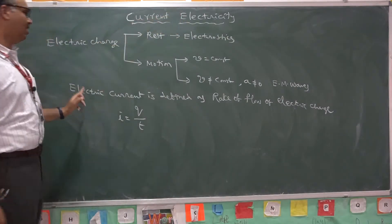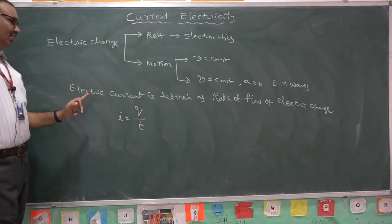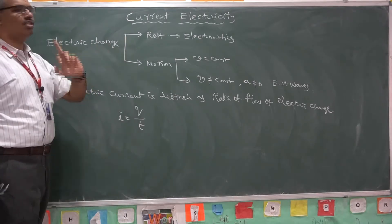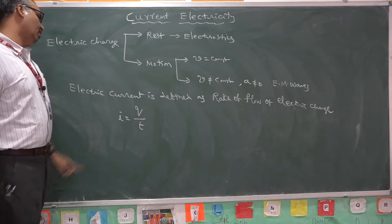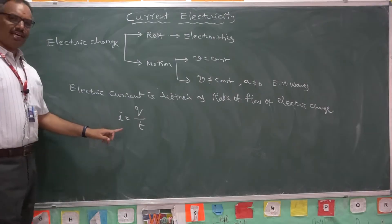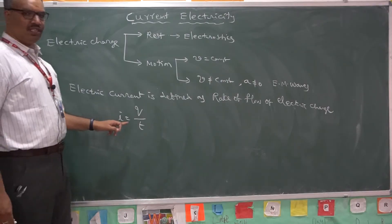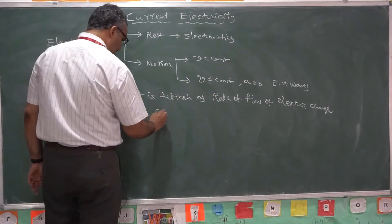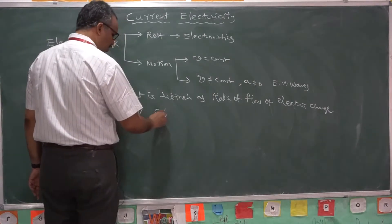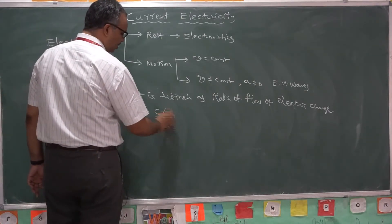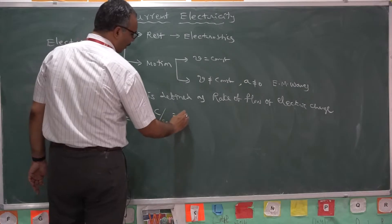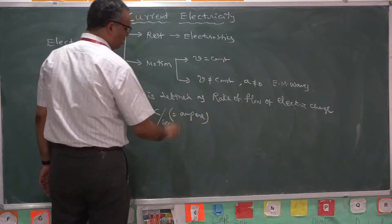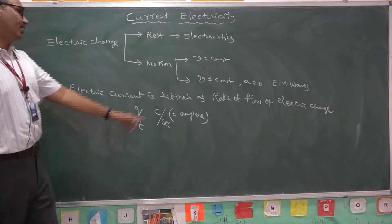Can you say what is current electricity? Current electricity is the study of electric charges under motion with constant speed. What is electric current? Electric current is defined as charge flown by time taken. If you take the units for this, charge is measured in Coulombs, time is measured in seconds. Coulomb per second is called ampere, named after the scientist.